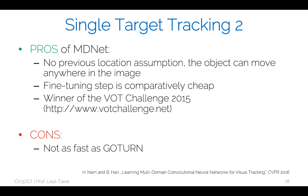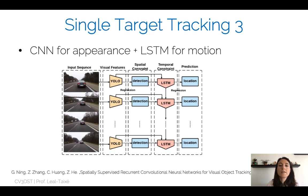The main advantage of MDNet over GOTURN is that there is no previous location assumption — even if the object moves to the opposite side of the image due to strong camera motion or fast movement, it can still be tracked. The fine-tuning step is comparatively cheap, making it usable in practice. MDNet won the Visual Object Tracking challenge in 2015. The main disadvantage is that it is not as fast as GOTURN, so it cannot run at 100 frames per second.